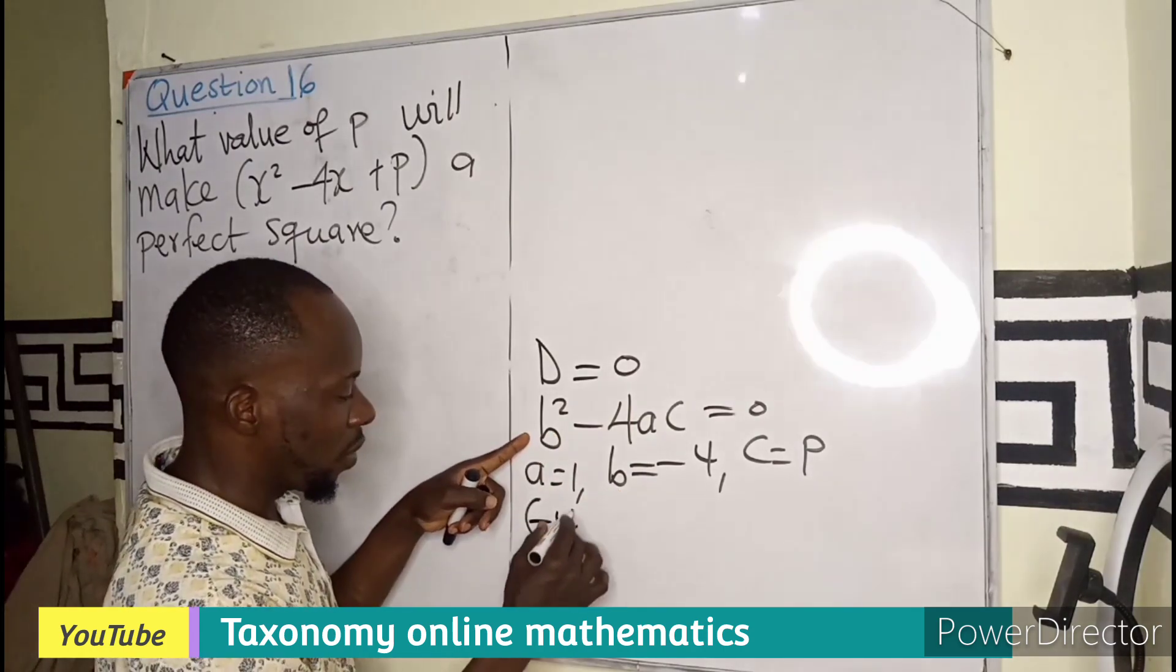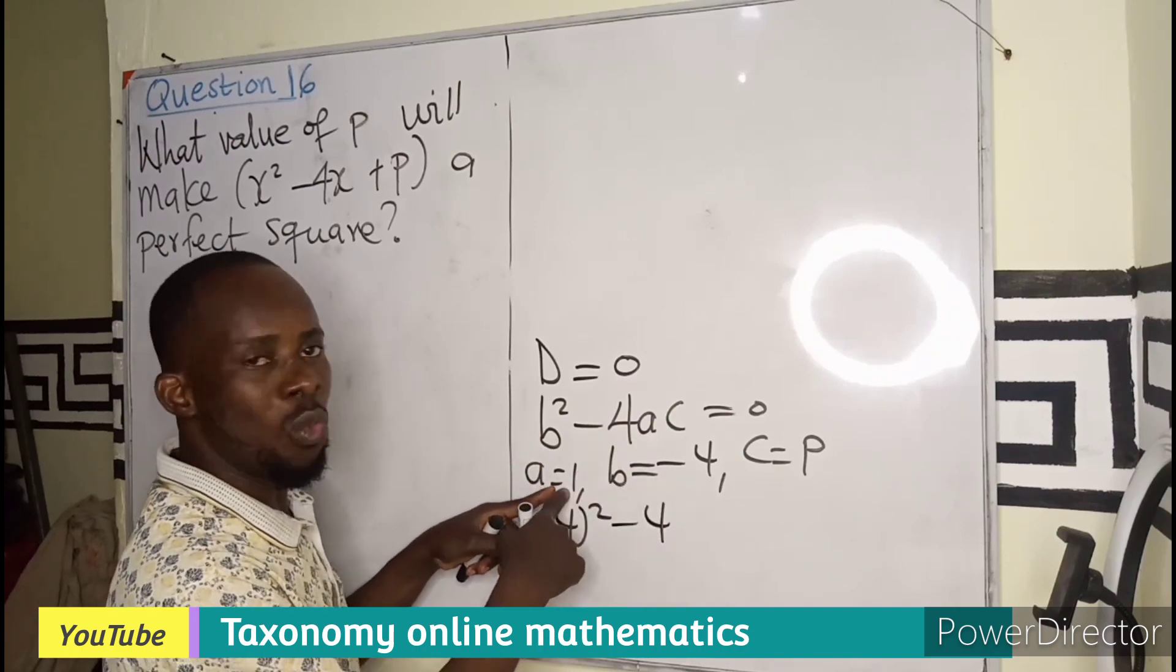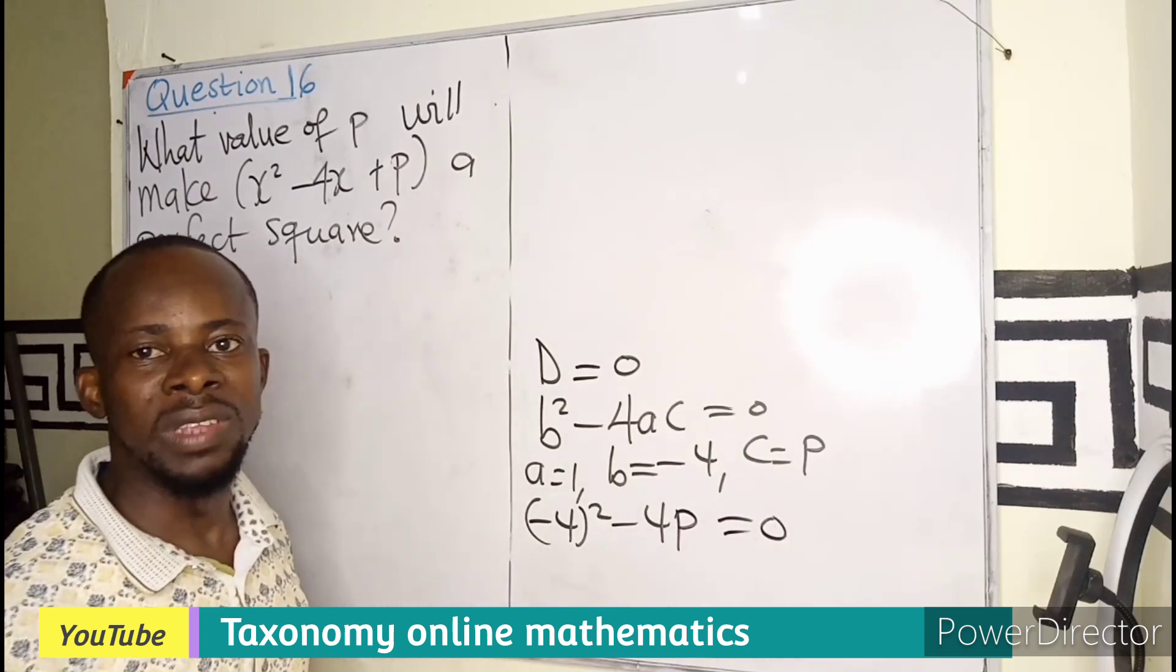that becomes minus 4 squared minus 4a, which is now 1, times c, which is P, must give us 0.